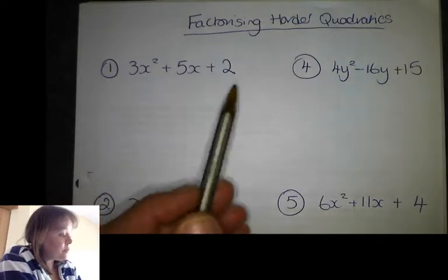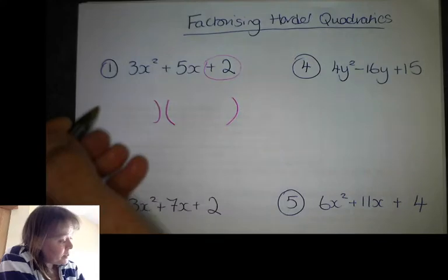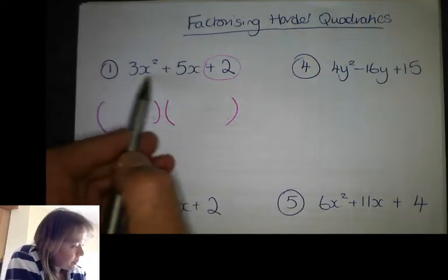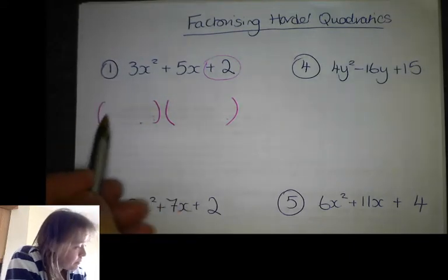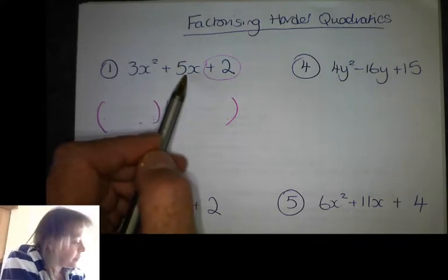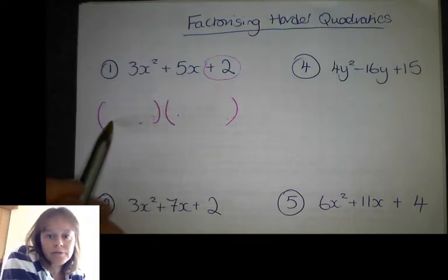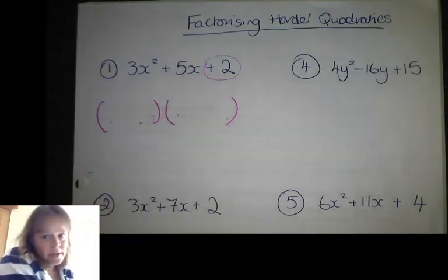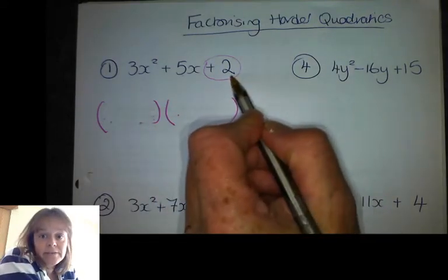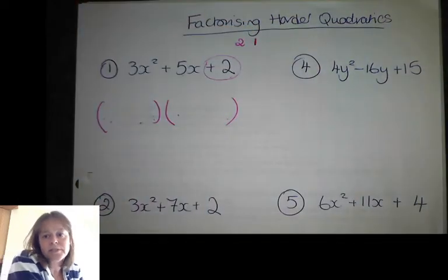If you think back to what we did last time, the number at the end comes from multiplying these two numbers together, and the number at the beginning comes from multiplying these two things together. The tricky bit this time is that the 5 in the middle comes from a combination of the things at the beginning and the end, and if there's a number at the front that makes it a little bit trickier. So firstly I'm going to start by making a list of everything that multiplies to give me positive two.